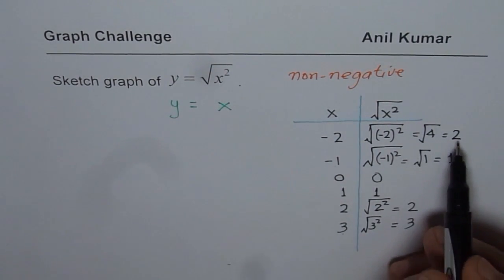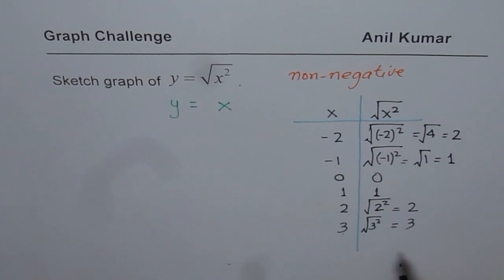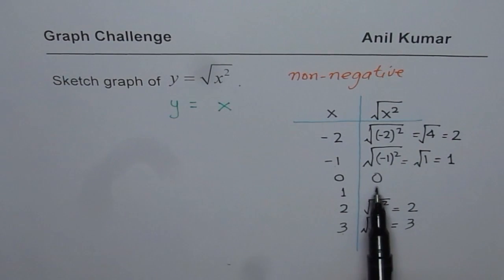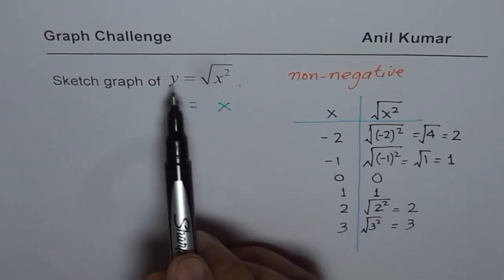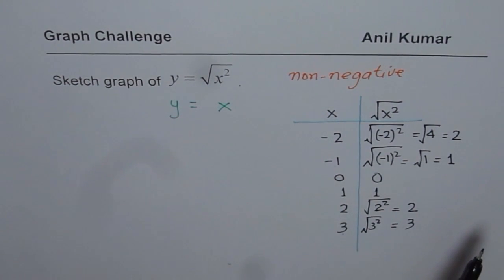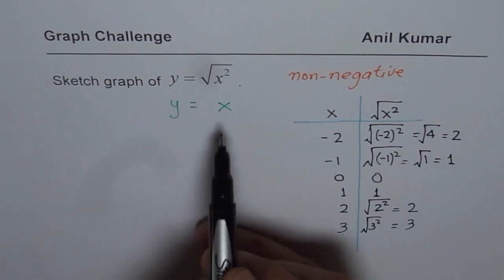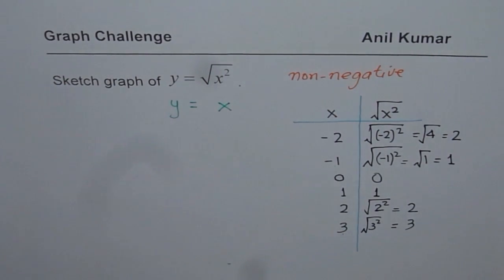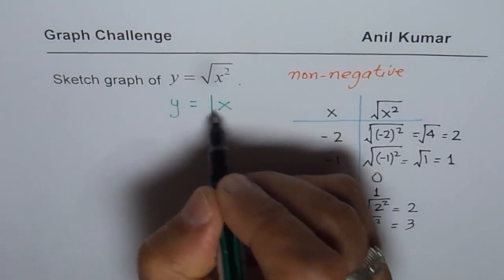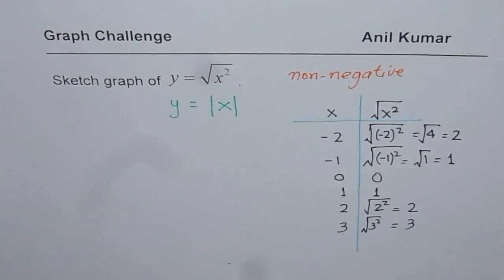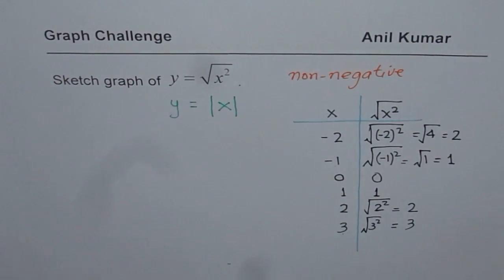So what you get here is always a positive value or 0 or non-negative. Do you understand? Therefore, what is this square root of x squared? It is always positive and we can show it by using absolute function. Do you see? It is absolute value of x, which you will get if you sketch these points.